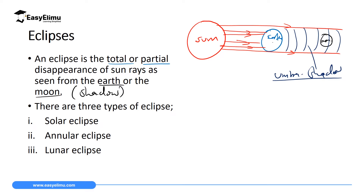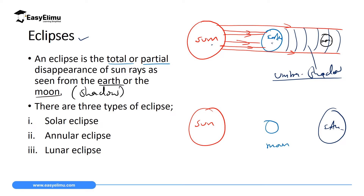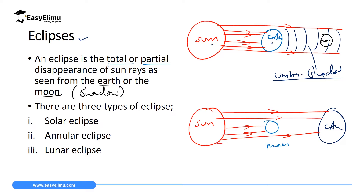This shadow formed when the Earth blocks the rays of light from reaching the moon is what we call an eclipse. In the second scenario, the moon is in between the sun and the Earth. When the sun emits rays, some reach the Earth's surface, but some are blocked by the moon. The space behind the moon will be darkness, so someone on the Earth's surface will see darkness caused by the moon blocking the rays of light. During the day, you will see some darkness when the eclipse occurs.